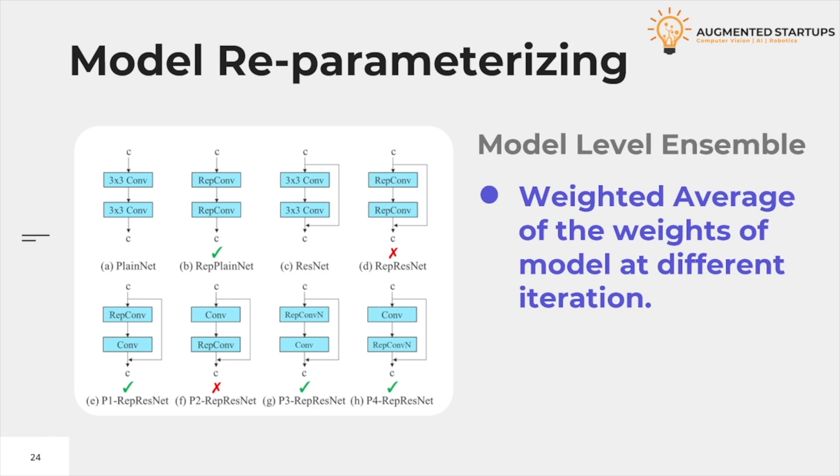Model re-parameterization uses gradient flow propagation paths to analyze how re-parameterized convolutions should be combined with different networks. RepConv combines 3x3 convolution, 1x1 convolution, and identity connections in one convolution layer. RepConv without identity connection is used to design the architecture of planned re-parameterized convolution. Re-parameterization technique involves averaging a set of model weights to create a model that is more robust to the general pattern that it's trying to model.